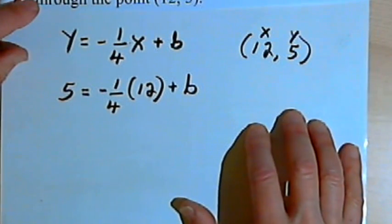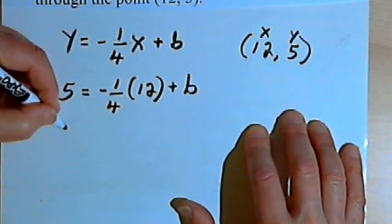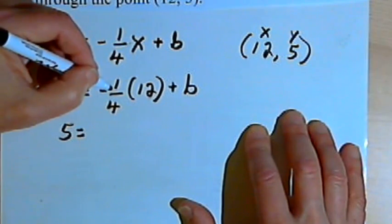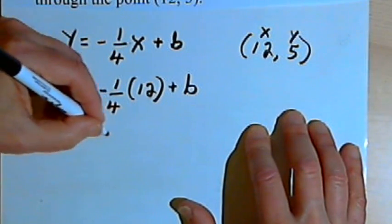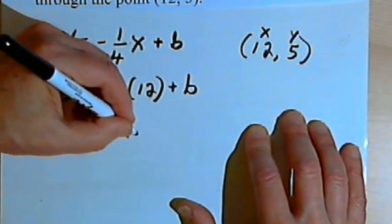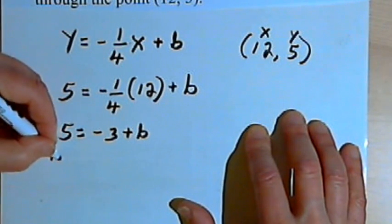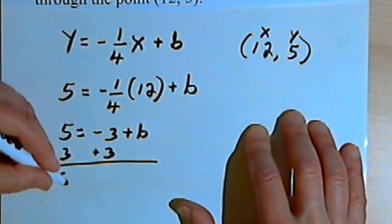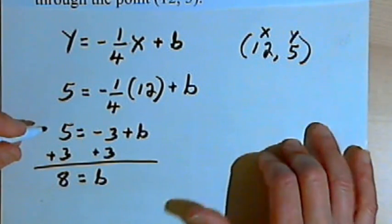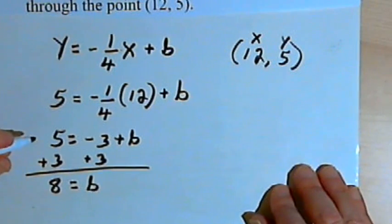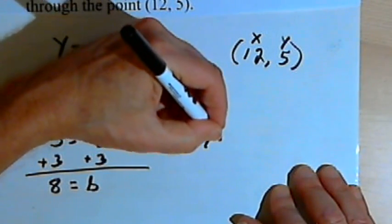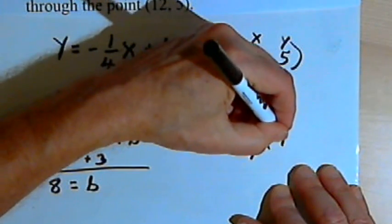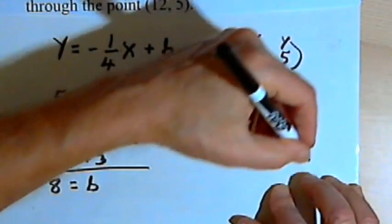Now I can do the math to find b. 1 quarter times 12 is 3, so negative 1 quarter times 12 is negative 3. So I have 5 equals negative 3 plus b. Adding 3 to both sides gives me b equals 8. Now I can complete my equation: y equals negative 1 quarter x plus 8.